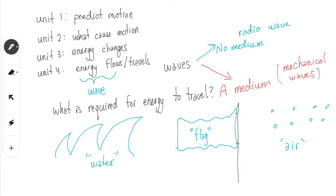For energy to travel you require a medium. But if you look at the example of a flag, what else was required for the flag to start waving besides the flag itself? Force, or energy — force is correct. So what's going to be the agent of the force? Think about your house outside — you have the Malaysian flag. In which type of weather conditions do you see the flag waving the most? Windy — the wind is the agent that applies the force in order to make the wave inside the flag move.